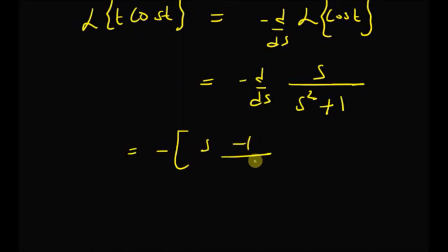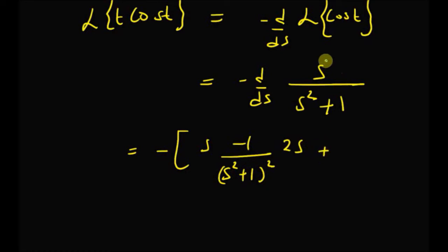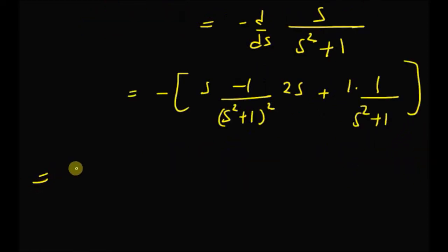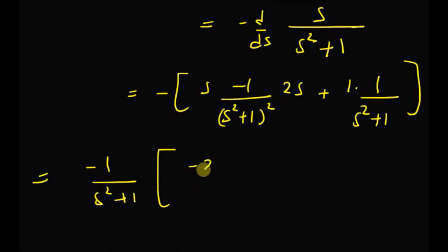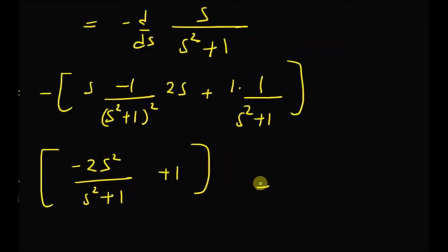Using the quotient rule, we get s · (−1/(s²+1)²) · 2s plus (1/(s²+1)), and then applying the negative sign we have minus 2s²/(s²+1)² plus 1/(s²+1). Upon simplification, the numerator becomes 1 minus s².